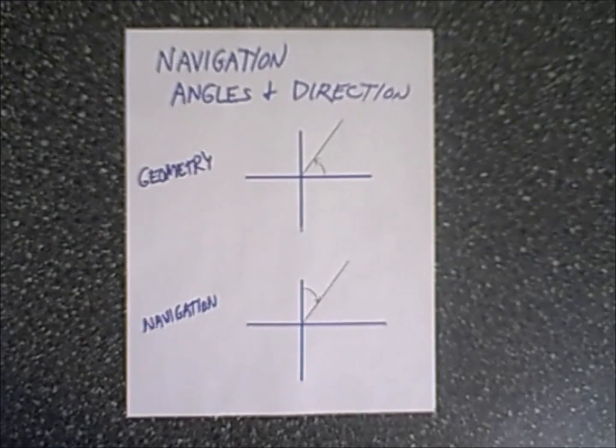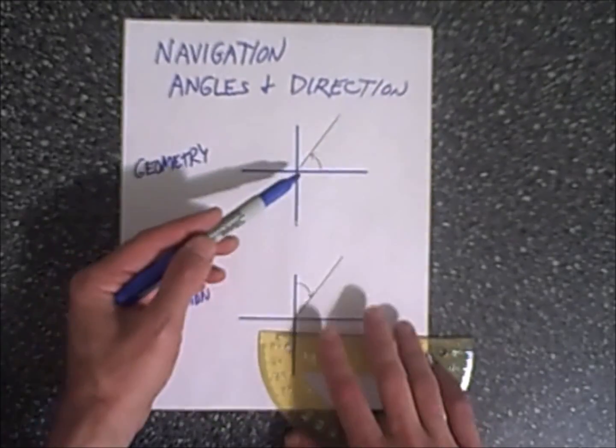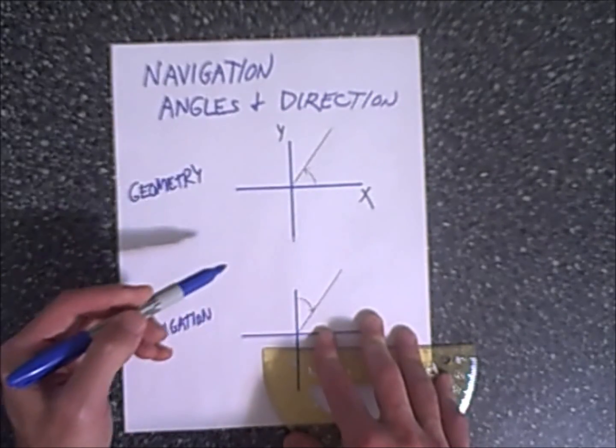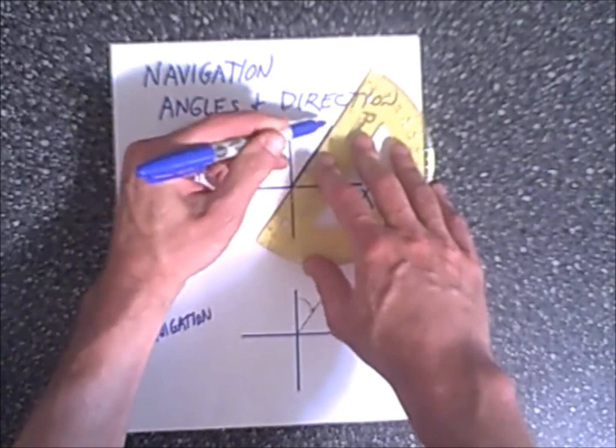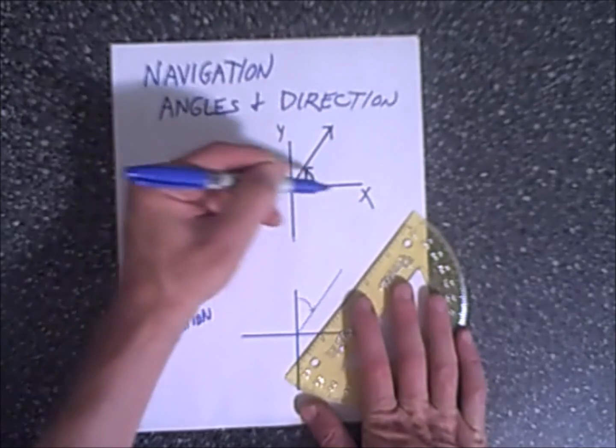One of the things that confused me most when I was a student is how to draw the angles of navigation, and what confused me most was simply that it differs from geometry. As most of you recall, in geometry when you draw an angle you start at the x-axis and you move counterclockwise. So for example, if this is a 50 degree angle, you would start at zero and go up to 50 degrees.